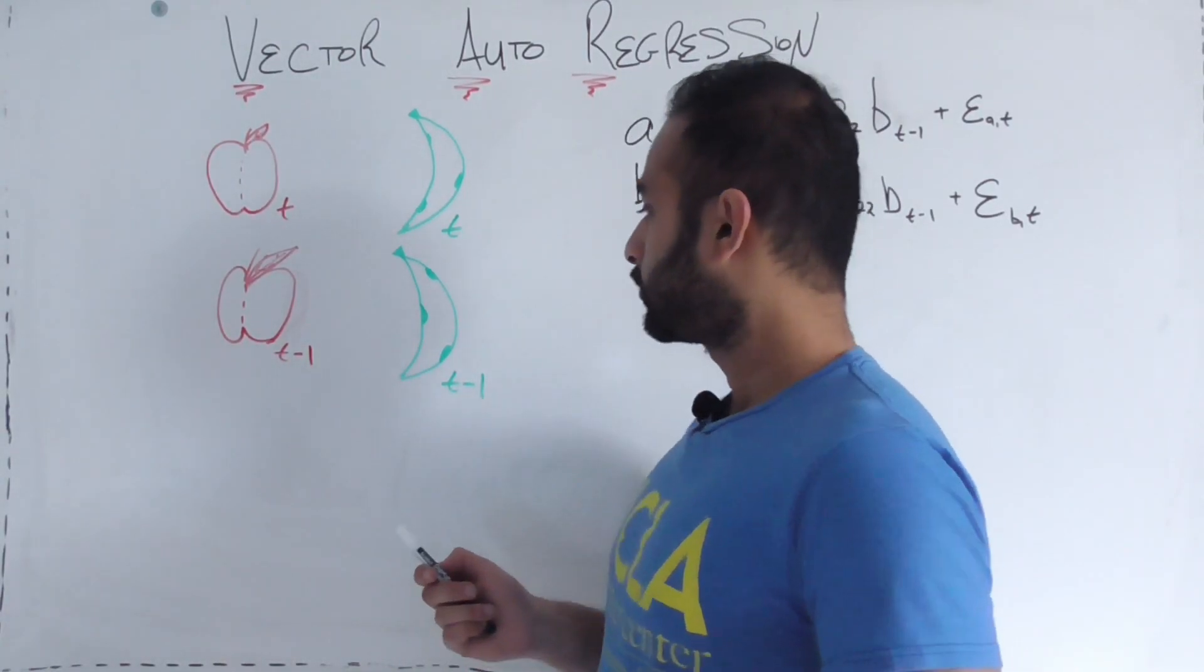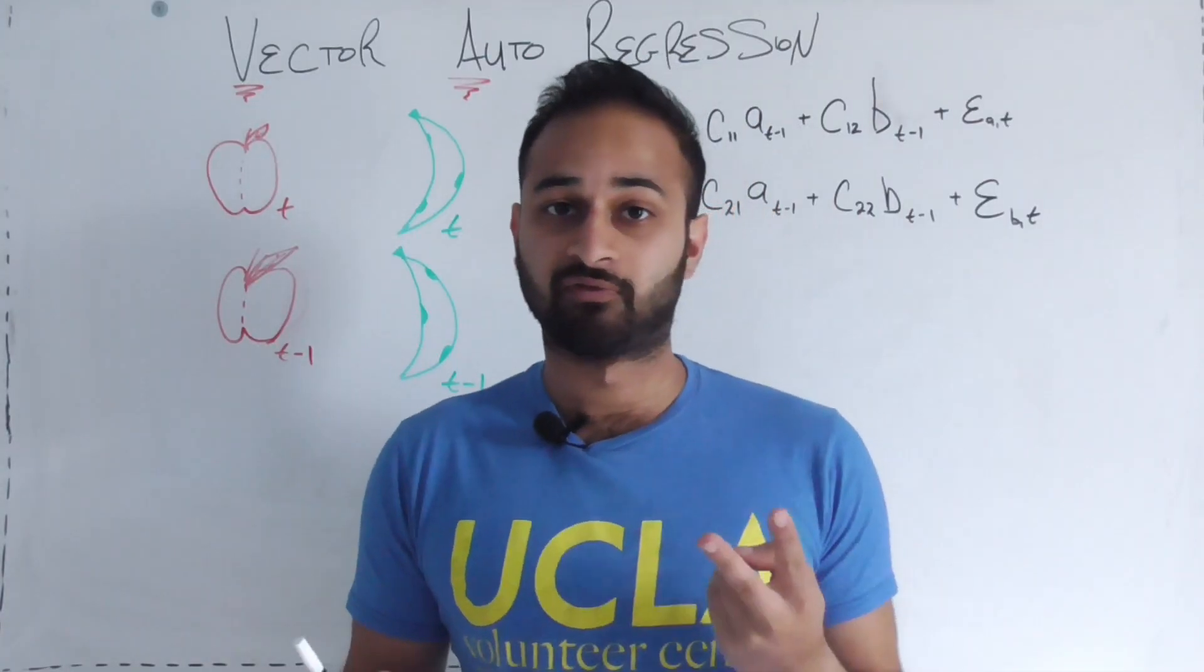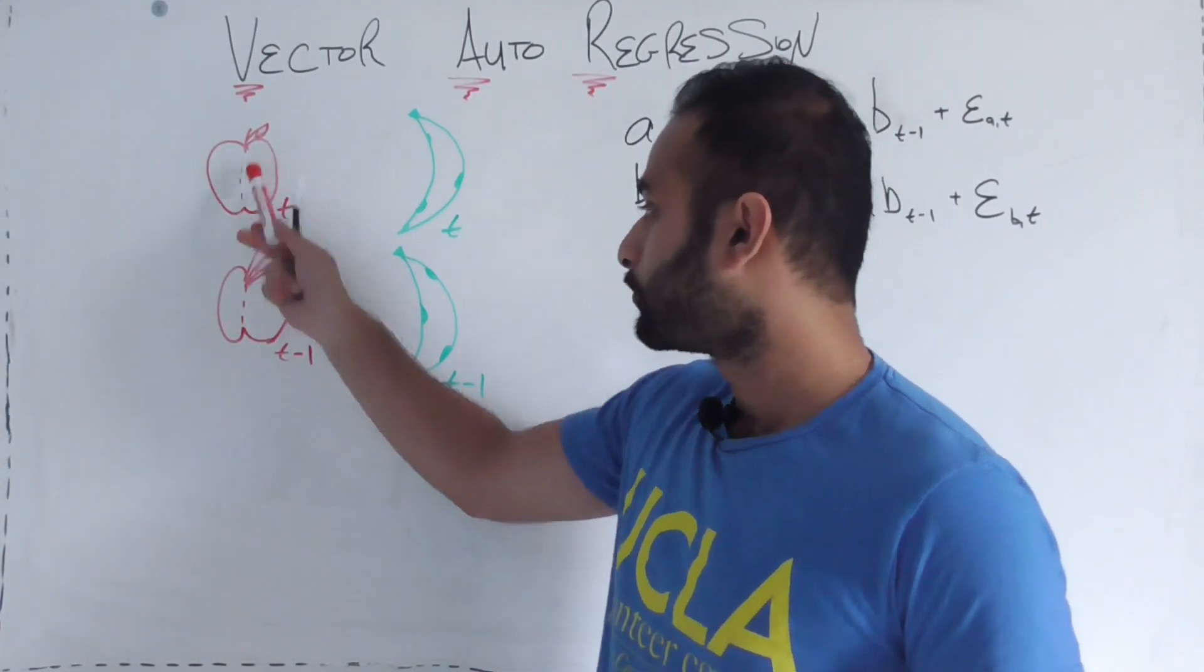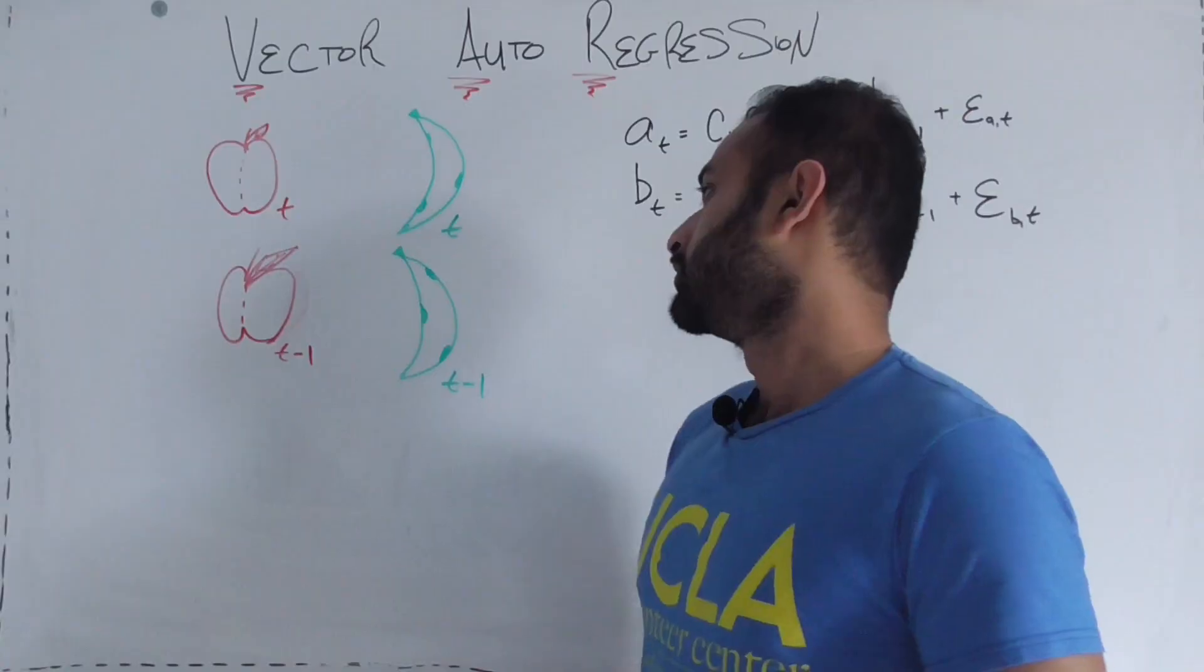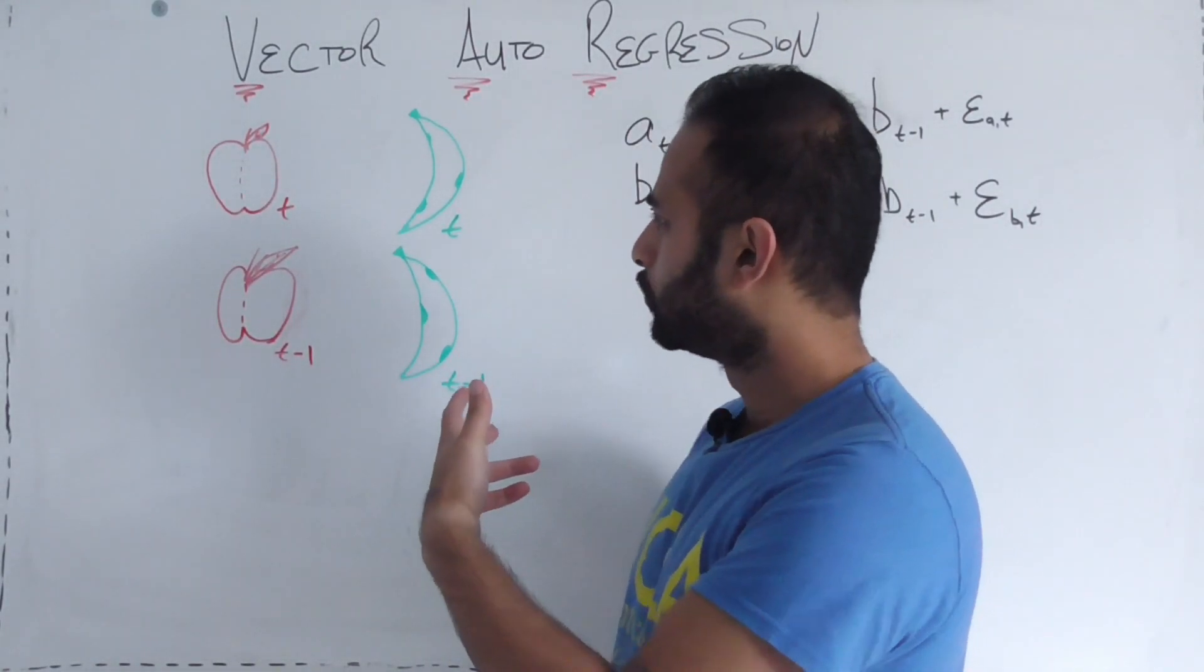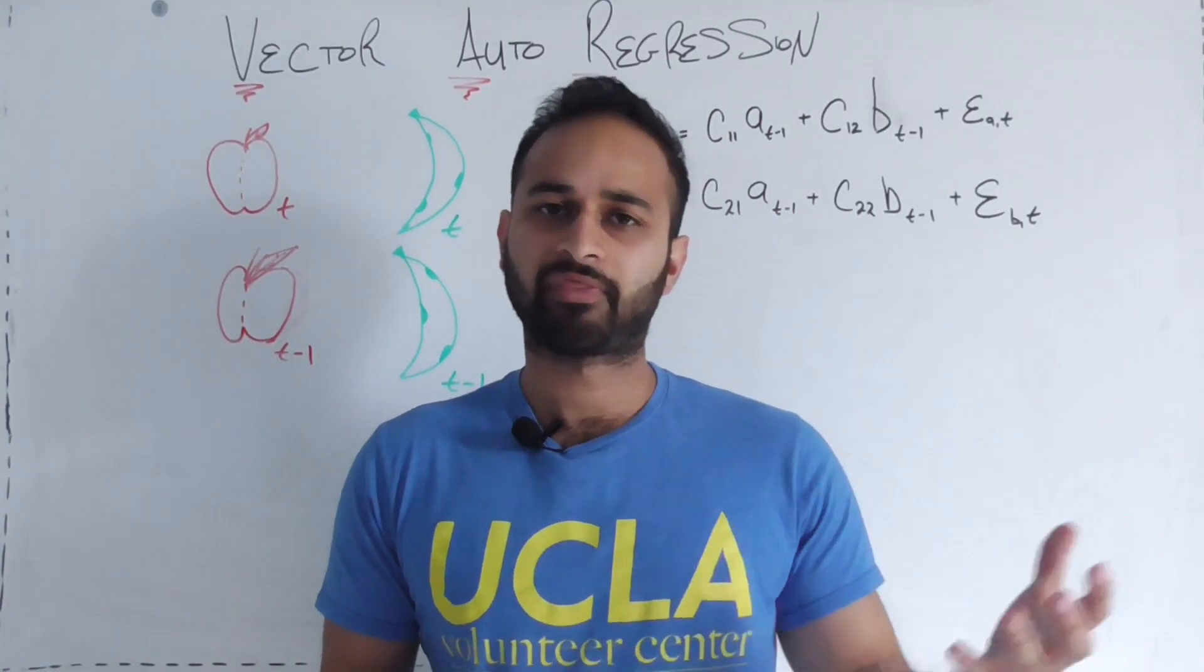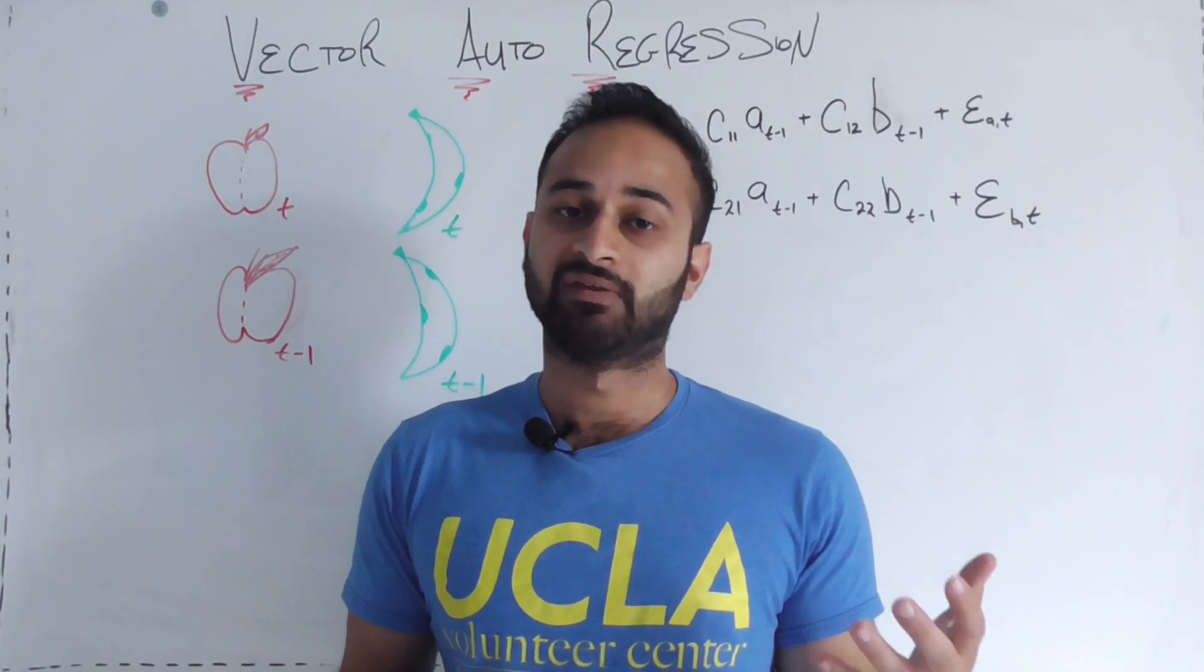As always, we're going to have a real-world setup so we can tie this back to earth. Let's say we are a fruit salesman and we just sell two different kinds of fruits: apples or bananas. I don't have any yellow markers, so the bananas are green. We want to find a model for how many apples and how many bananas we're going to sell in any given month.